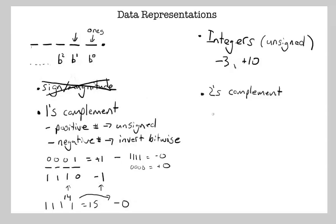So in two's complement arithmetic, it's almost like one's complement, but the process for getting a negative number is instead of just strictly inverting bitwise.